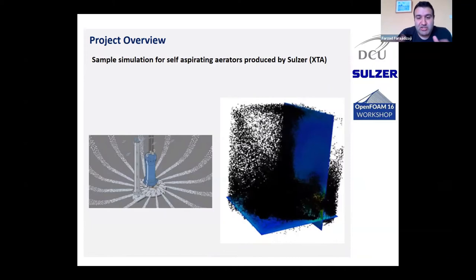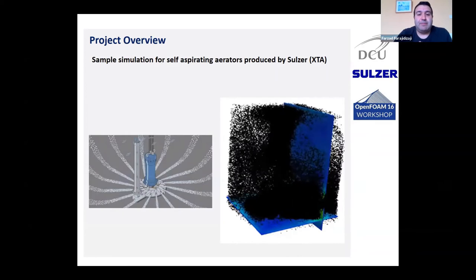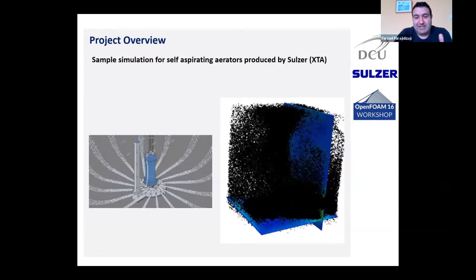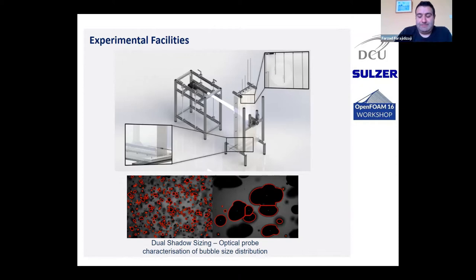Instead, we are doing a simpler test in a one-meter depth tank to study bubble column oxygenation, where we can study the efficiency of micro-bubbles and identify dead zones. We have two test facilities: the large test facility and this small test facility which is just one meter. We have two different methods to characterize bubble size distribution — shadow sizing and optical probe — to find out the size distribution of bubbles in our experiment.